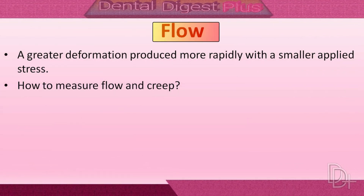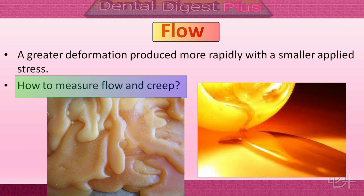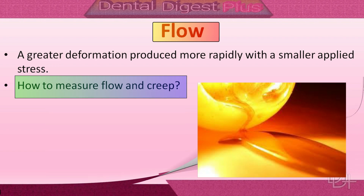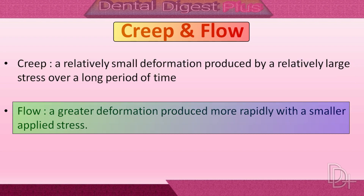Flow implies a greater deformation produced more rapidly with a smaller applied stress. The term 'flow' is generally used in dentistry to describe the rheology of amorphous materials such as waxes. To measure flow and creep, a cylinder of prescribed dimensions is subjected to a given compressive stress for a specified time and temperature. Creep or flow is measured as the percentage decrease in the length of a material under these testing conditions. Creep implies a relatively small deformation produced by a large stress over a long period of time, whereas flow implies a greater deformation produced more rapidly with a smaller applied stress.